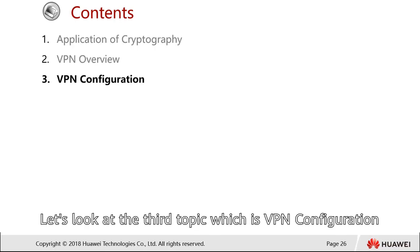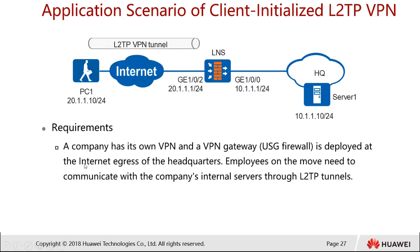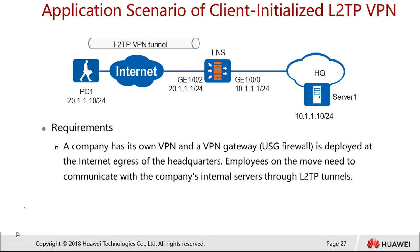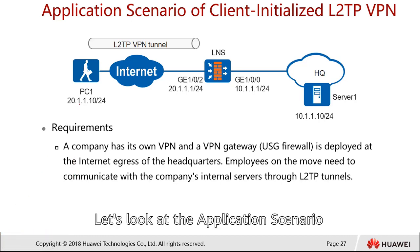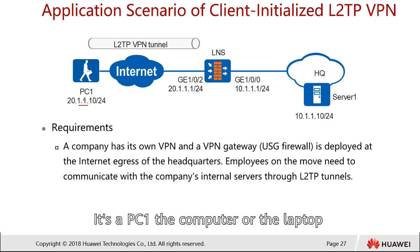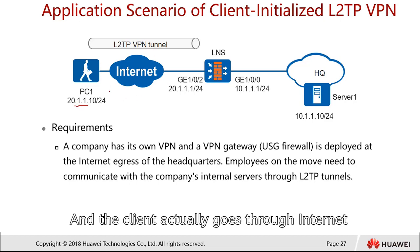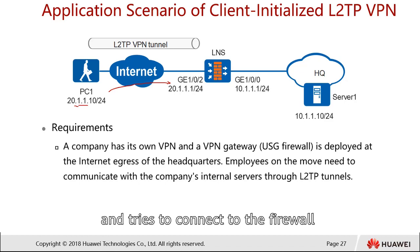Let's look at the third topic: VPN configuration. We'll start with the application scenario of the client-initiated L2TP VPN. Here we have a client, PC1, a computer or laptop with an IP in the 20.x.x.x range, which goes through the internet and tries to connect to the firewall at headquarters.